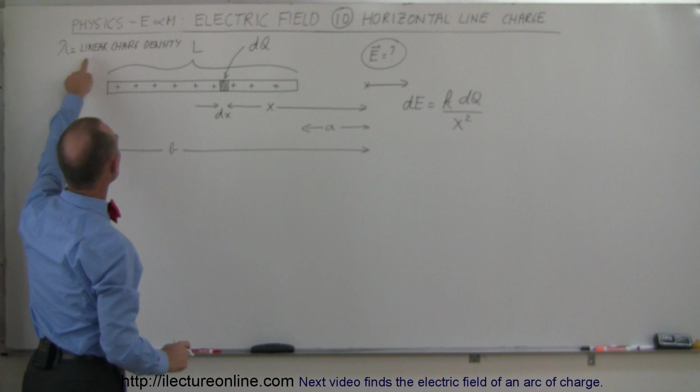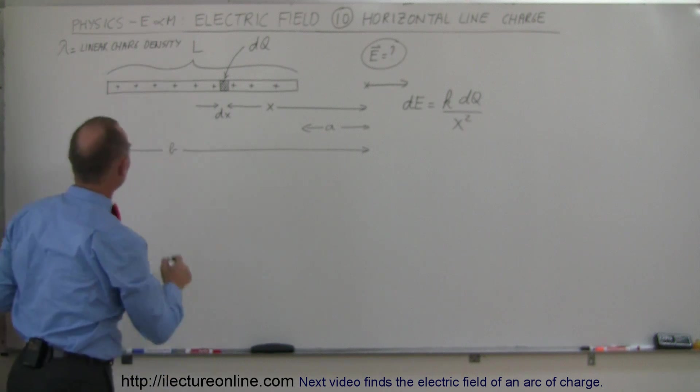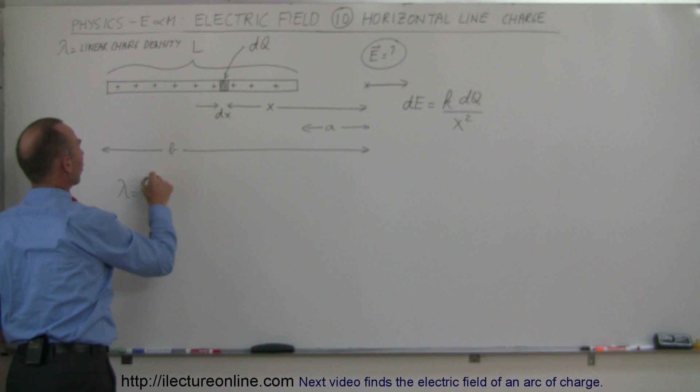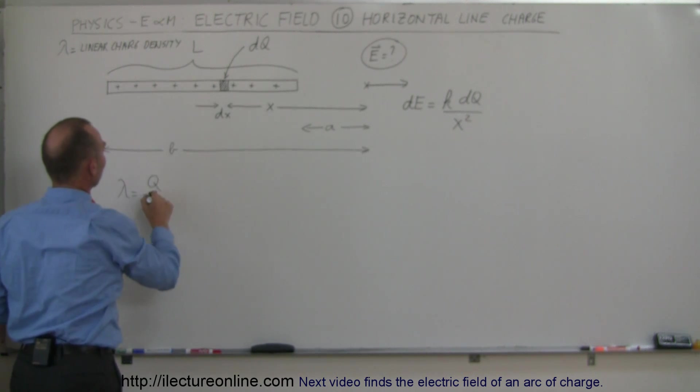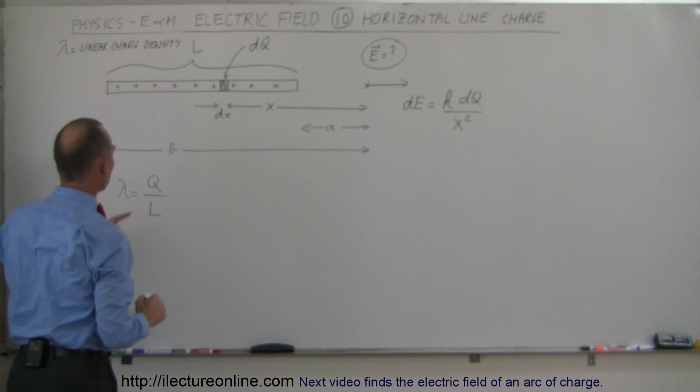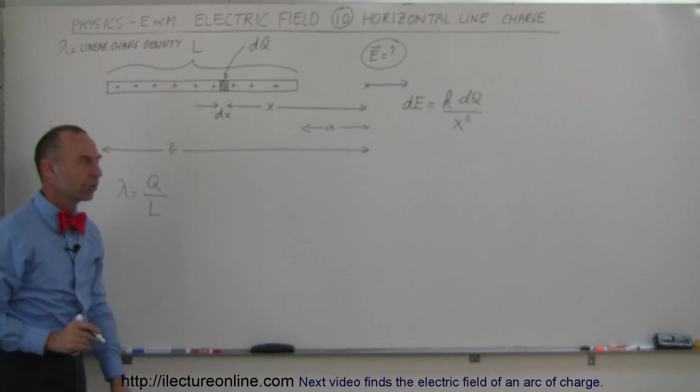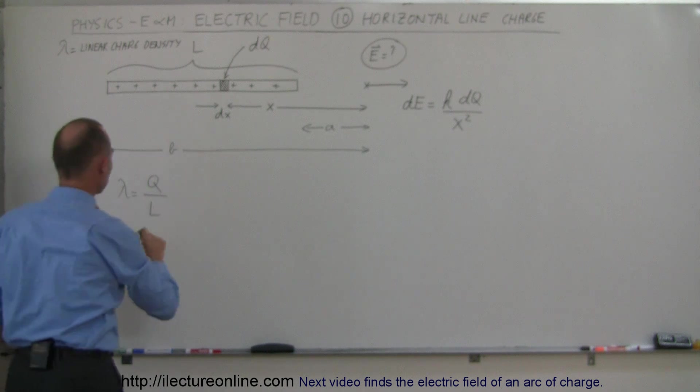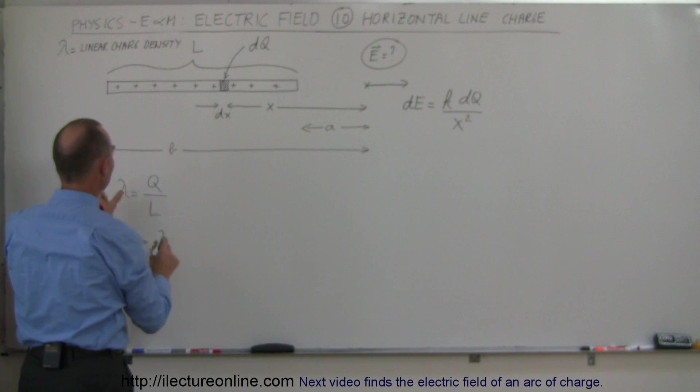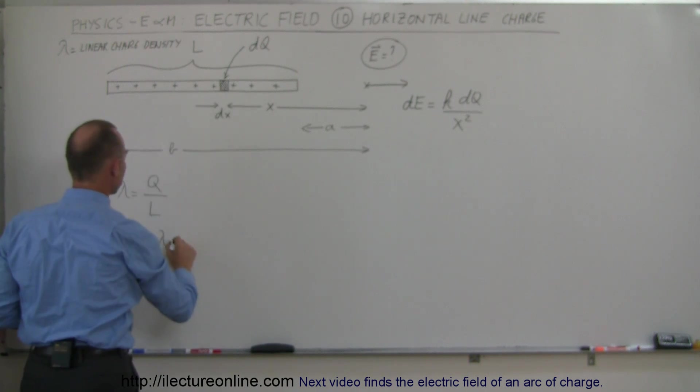Now the linear charge density is lambda, and so we can say that lambda therefore is equal to the total charge placed on the segment right here, divided by the length L. So that would be the linear charge density. And so we could say that the DQ in this case is equal to the linear charge density times the length of the segment, which would be DX.